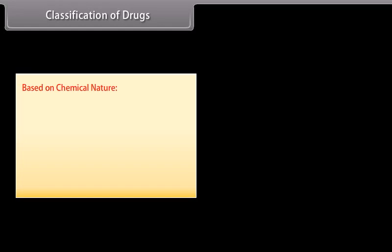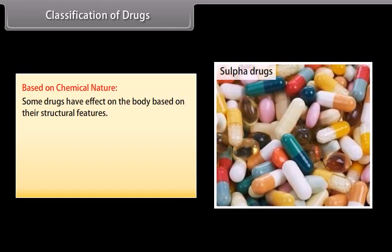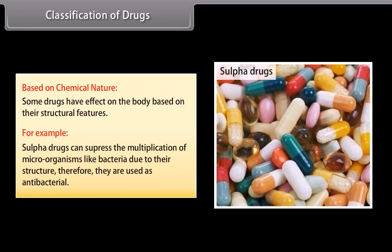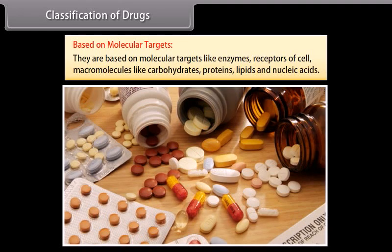Based on chemical nature: some drugs have an effect on the body based on their structural features. For example, sulphur drugs can suppress the multiplication of microorganisms like bacteria due to their structure; therefore, they are used as antibacterial agents. Based on molecular targets: drugs are based on molecular targets like enzymes, receptors of cells, and macromolecules like carbohydrates, proteins, lipids and nucleic acids.